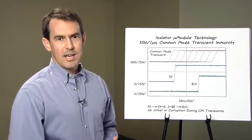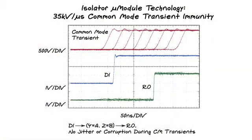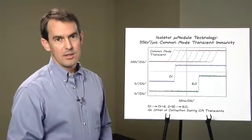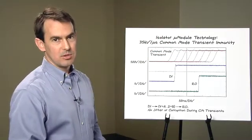I mentioned high common mode transient rejection. This picture shows the LTM 2881 communicating through repeated 1200 volt transients slewed at greater than 35,000 volts per microsecond. The repetitive data transfer shows zero jitter on the output.